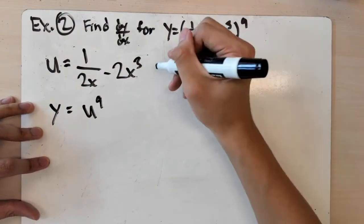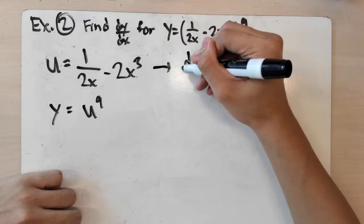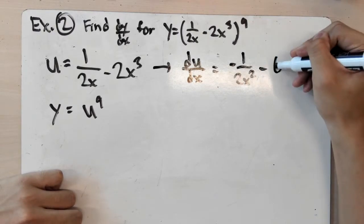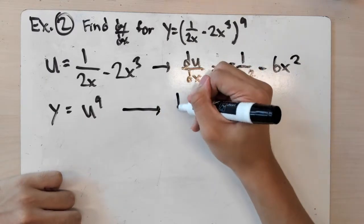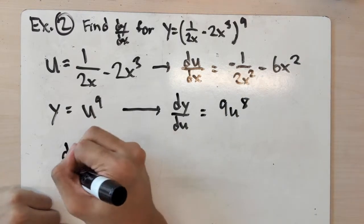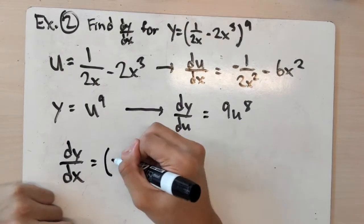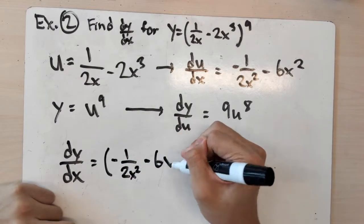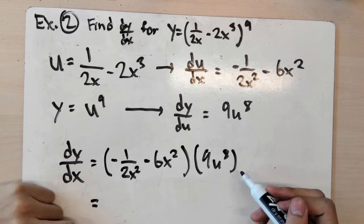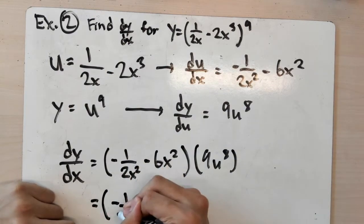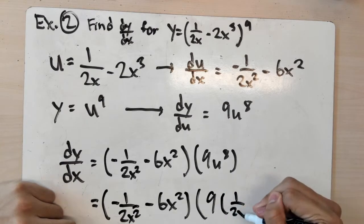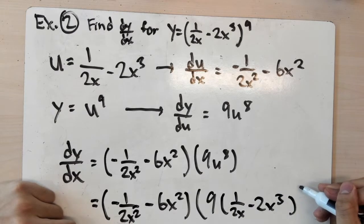We find the derivatives of both smaller functions. The derivative of u, du/dx, equals negative 1 over 2x squared minus 6x squared. The derivative of y, dy/du, equals 9u to the eighth. By chain rule, we multiply these two: (negative 1 over 2x squared minus 6x squared) times 9u to the eighth. Substituting u back in gives: (negative 1 over 2x squared minus 6x squared) times 9 times (1 over 2x minus 2x cubed) to the eighth.